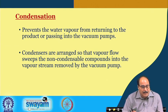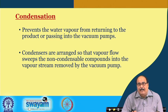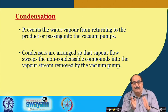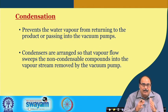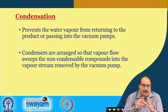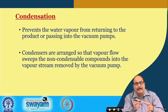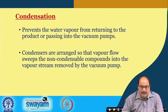Condensation prevents the water vapor from returning to the product or passing into the vacuum pump. The condensers are arranged so that vapor flow sweeps the non-condensable compounds into the vapor stream and they are removed by the vacuum pump. Effective condensation is very important because the rate of mass transfer and the sublimation process are greatly influenced by proper condensation. The moisture subliming as gas is condensed and converted into ice, then finally removed from the system.